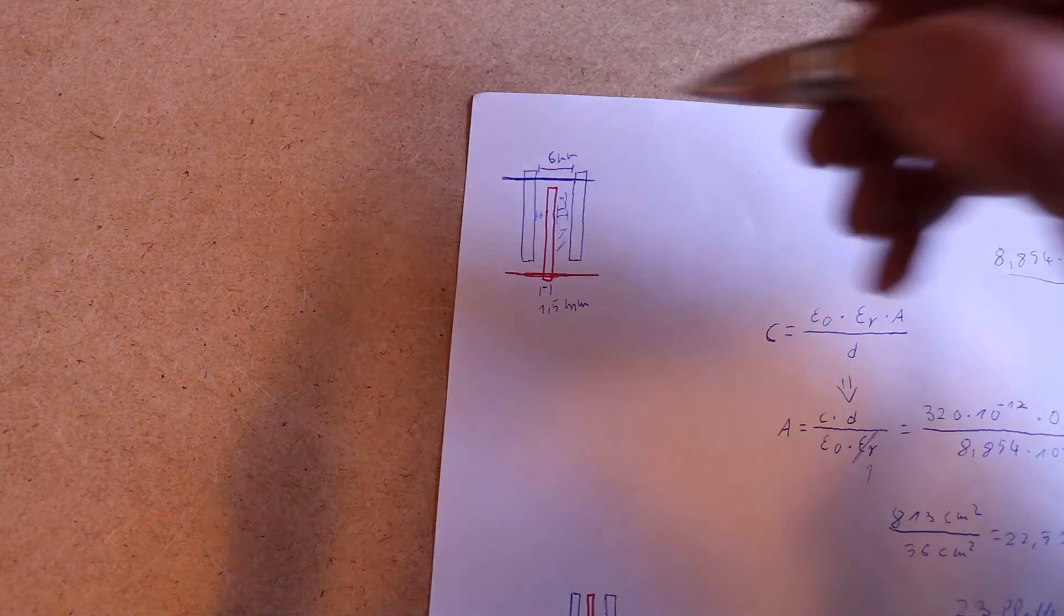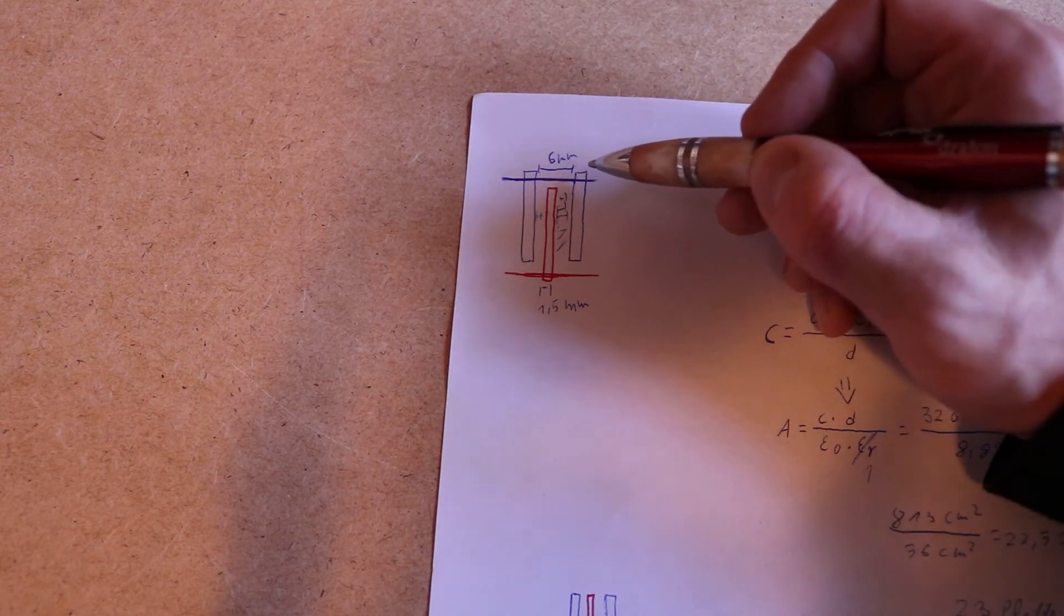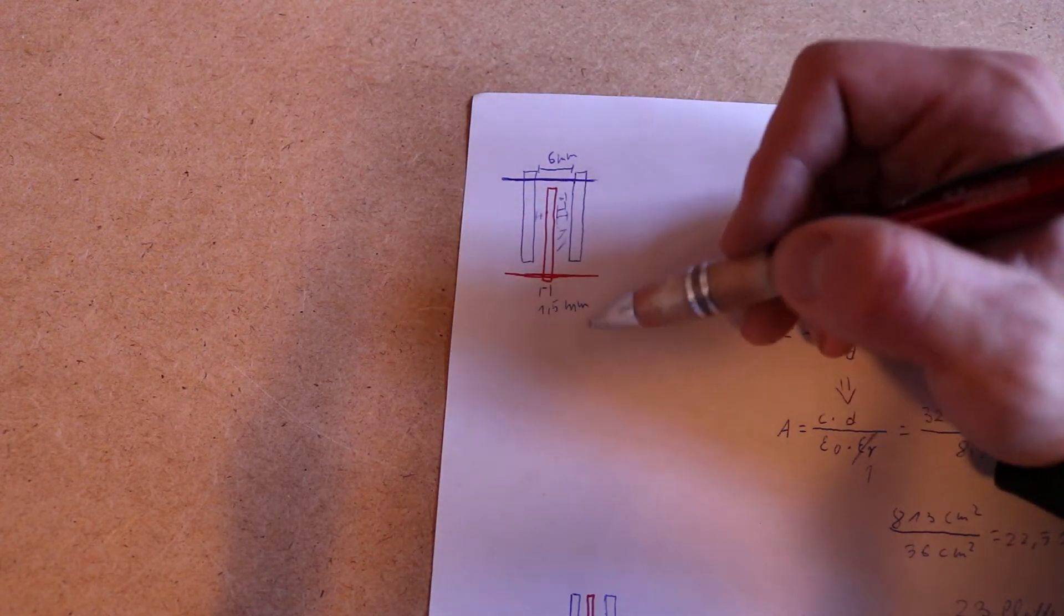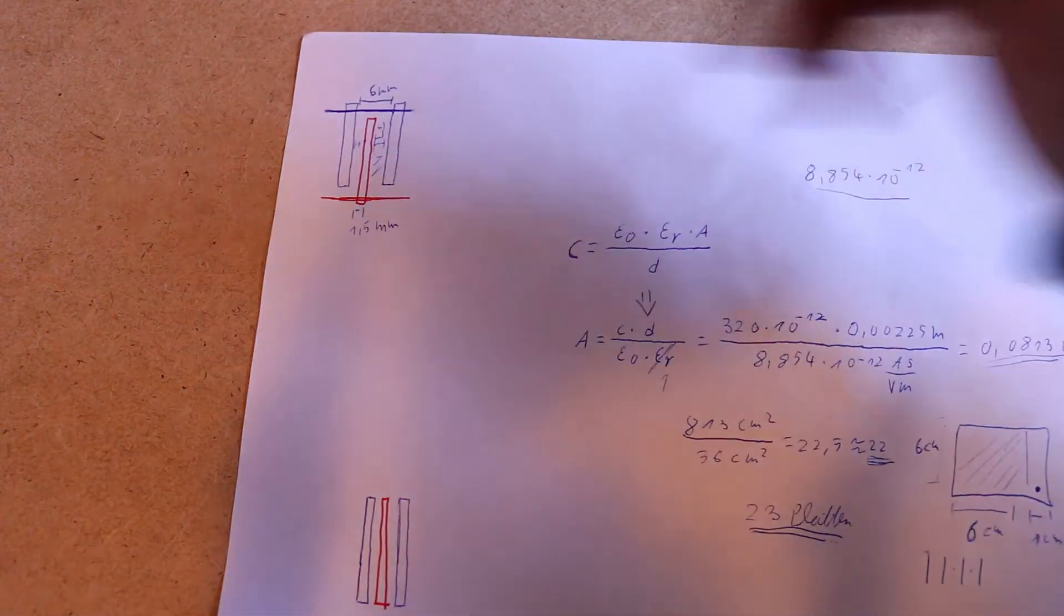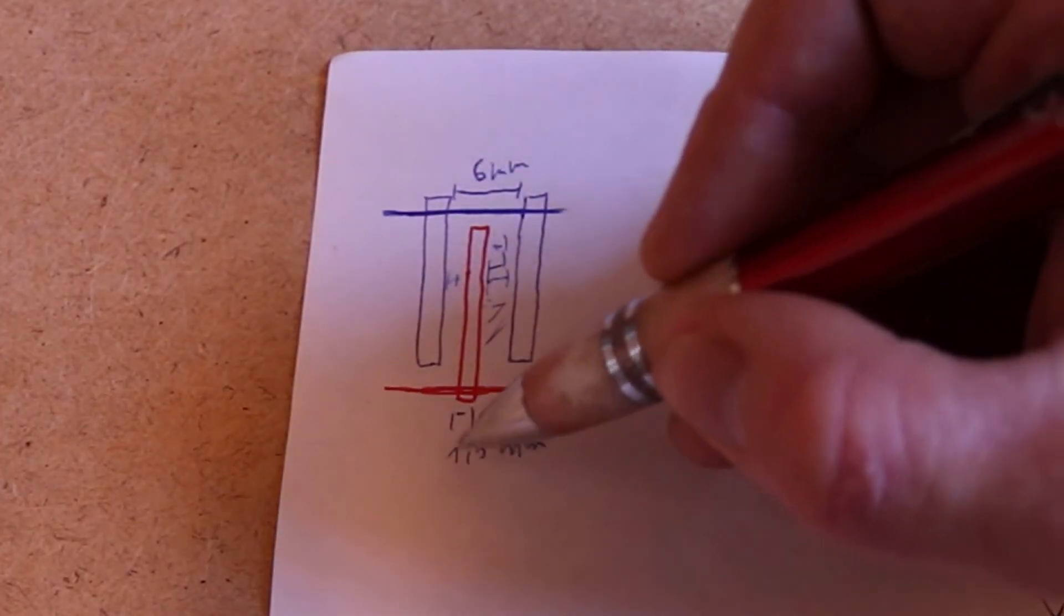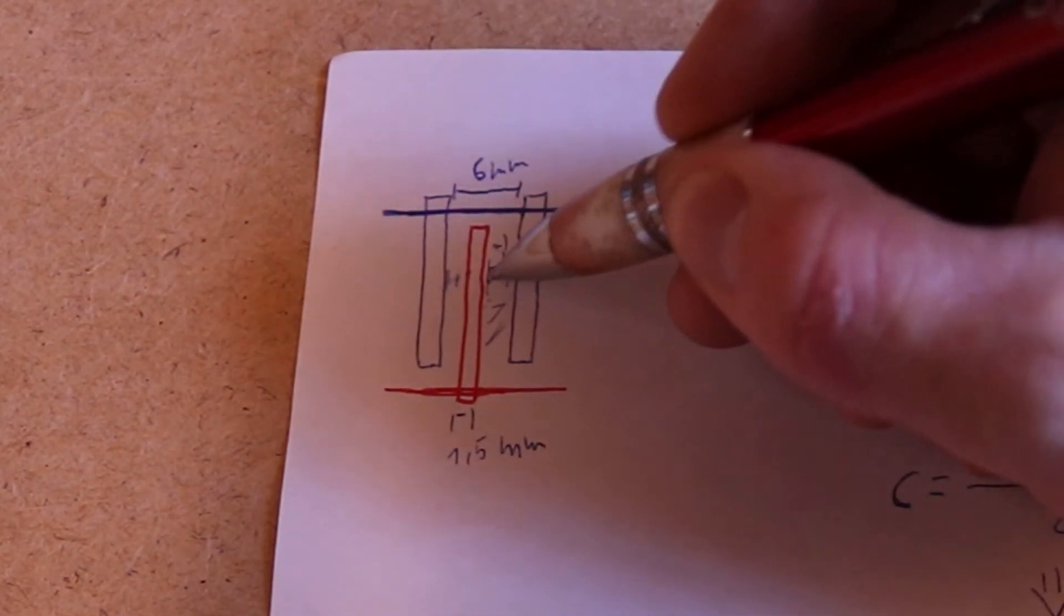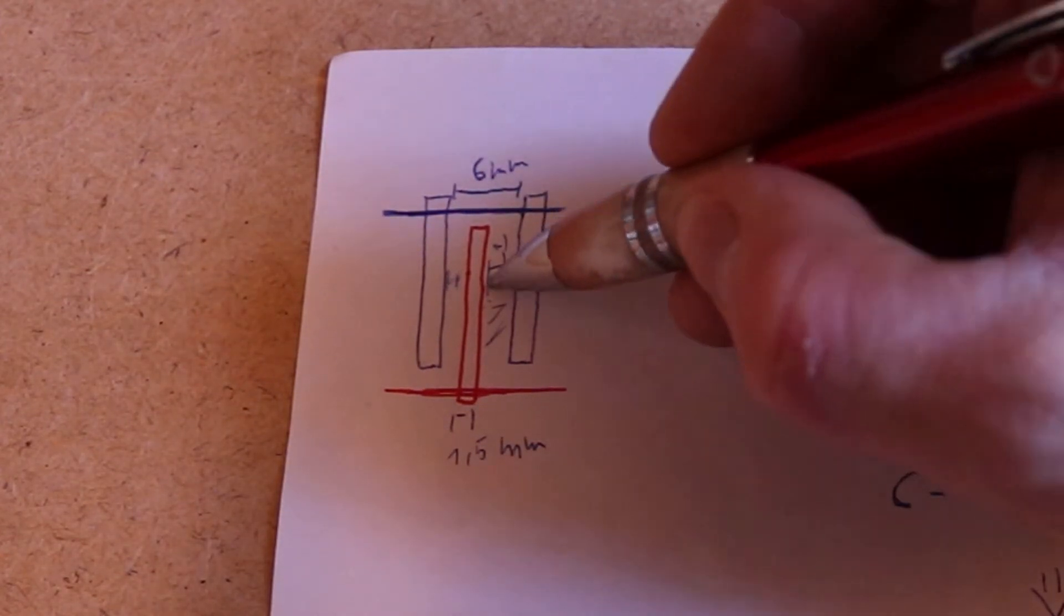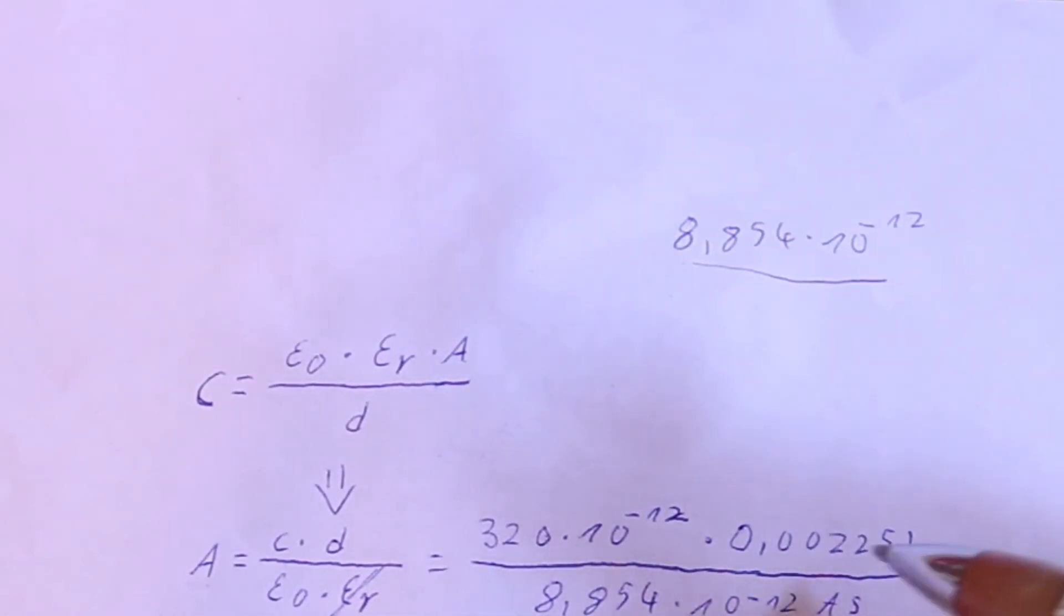One small note on the distance between the plates: I have, on one rod, two plates separated by two nuts, approximately 6 millimeters. Then the opposite plate is in there, and the thickness of the plate is 1.5 millimeters. To get the spacing between the plates, we subtract the 1.5 millimeters, and then we have these two gaps, and we divide by two to get the distance from one gap: 0.00225 meters.